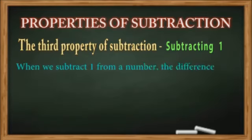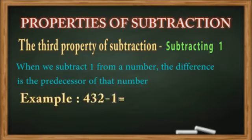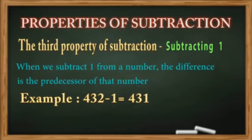The third property of subtraction is subtracting one: when we subtract one from a number, the difference is the predecessor of that number. For example, subtracting one from 432 gives 431, which is the predecessor of 432. Predecessor means the number that comes just before the given number.